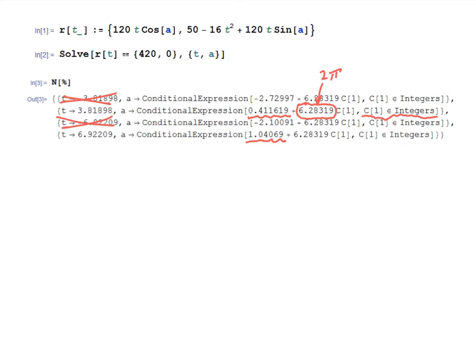Now, of course, based on the picture of our problem, we know that our alpha is going to be between 0 and 90 degrees, so we're not going to want to add 2 pi to any of those angles. So the numbers that we want are 0.411619, again in radians, and 1.04069. So those would be our answers in radians.